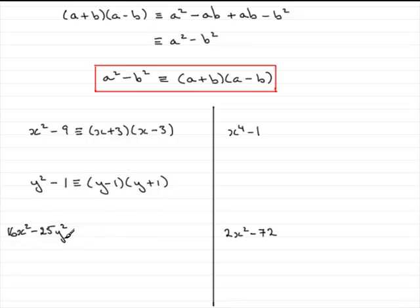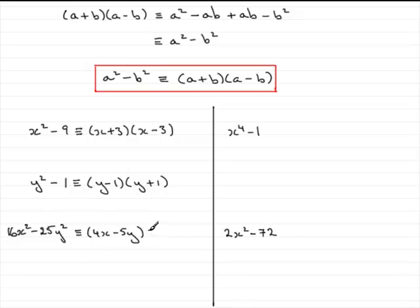In this example, I picked it just to show you that you can have numbers and letters all mixed together in the same term, but it is still the difference — the minus — between two squares. This is the square of 4x: 4x times 4x gives 16x squared. And this is the square of 5y: 5y times 5y is 25y squared. So we can write this down as 4x minus 5y multiplied by 4x plus 5y.